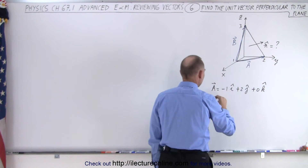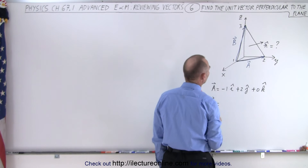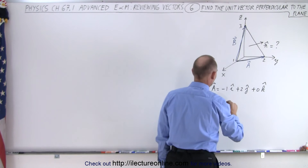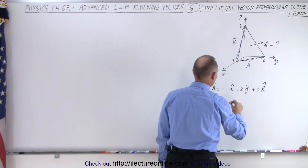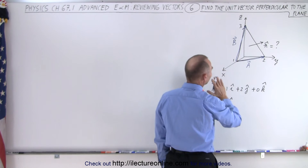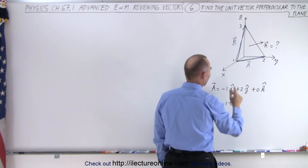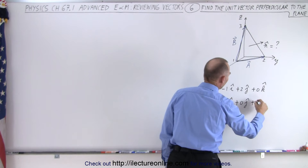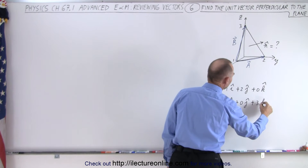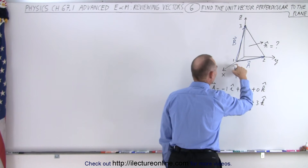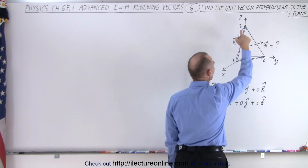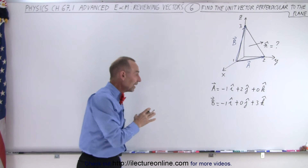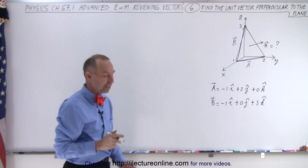Vector B is equal to: it starts from x equals 1, goes to x equals 0, so minus 1 in the i direction. It's in the x-z plane, so plus 0 in the j direction and plus 3 in the k direction because it goes from z equals 0 to z equals 3. So now we have vector A and vector B defined.